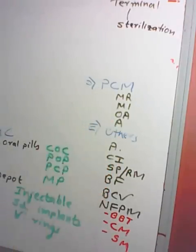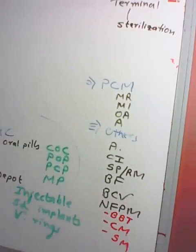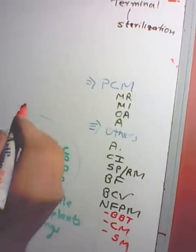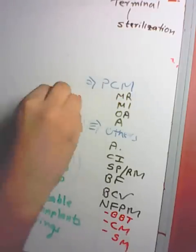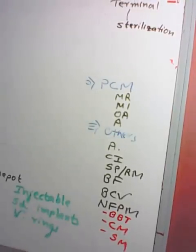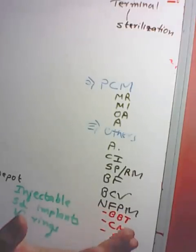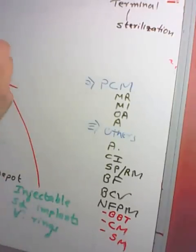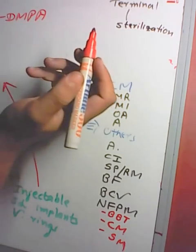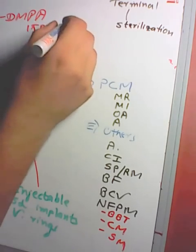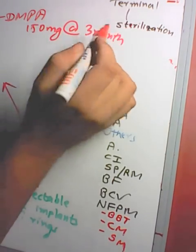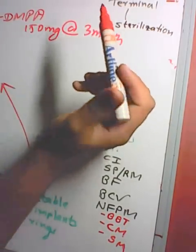The male pill is gossypol. Injectables can be progestogen-only: DMPA (Depot Medroxyprogesterone Acetate), given as 150 mg every 3 months. DMPA's mechanism of action is suppression of ovulation. It does not affect lactation.